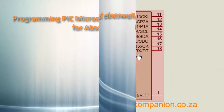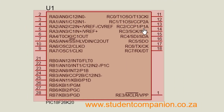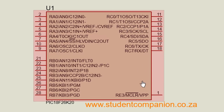Most PIC microcontrollers have a CCP module. CCP stands for capture, compare, and pulse width modulation. This PIC microcontroller has two CCP modules: CCP1 and CCP2. CCP2 is the standard capture, compare, and pulse width modulation, while CCP1 is the enhanced capture, compare, and pulse width modulation.